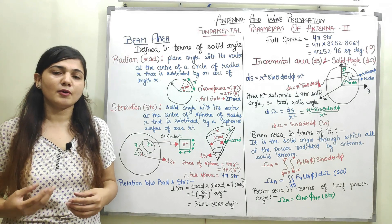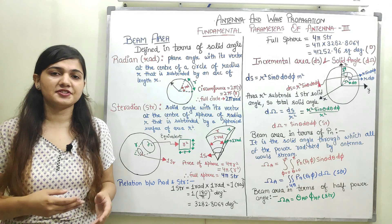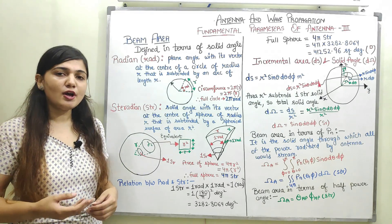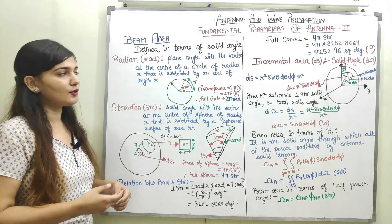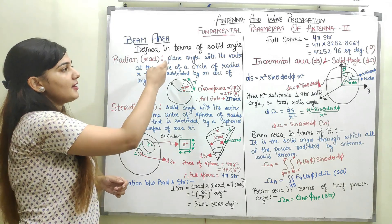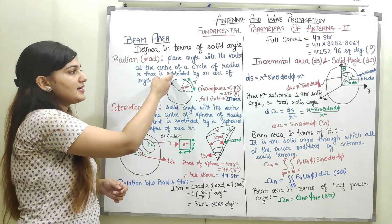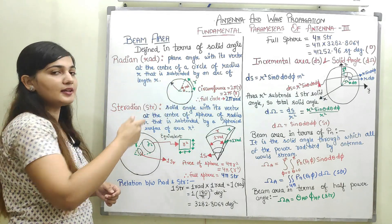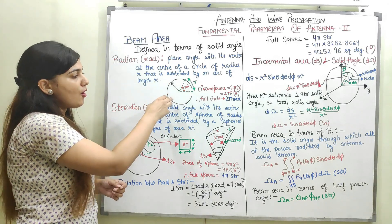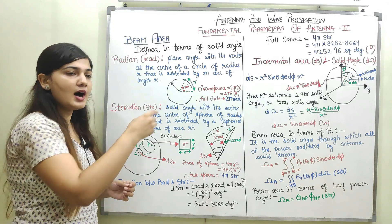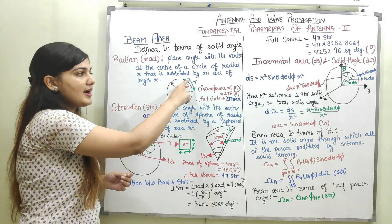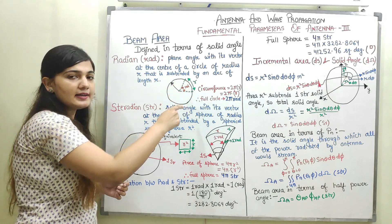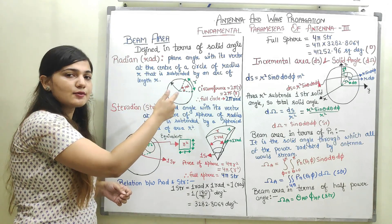To understand solid angle, I will first explain what a plane angle is. A plane angle is represented by a unit called radian. A radian is the plane angle with its vertex at the center of a circle of radius r, subtended by an arc of length r. If I have a circle of radius r and draw an arc of length r, this arc makes a certain angle at the center of the circle — that angle is called one radian.